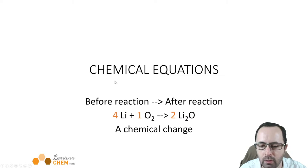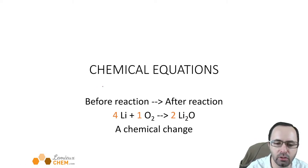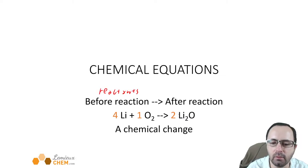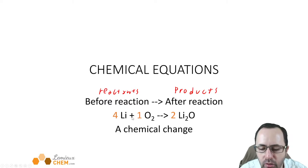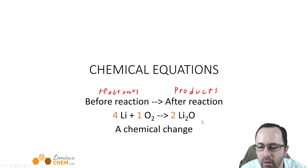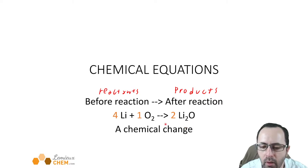A chemical equation looks like this. We have before the reaction, then we have an arrow, and we have after the reaction. What we have before the reaction are called reactants, and what we have after the reaction we call products. Below we have an example: four lithium atoms react with one oxygen molecule and make two units of lithium oxide, an ionic compound. This represents a chemical change or a chemical reaction.